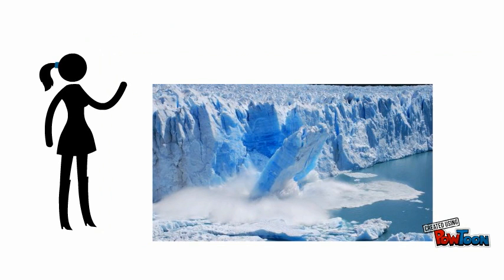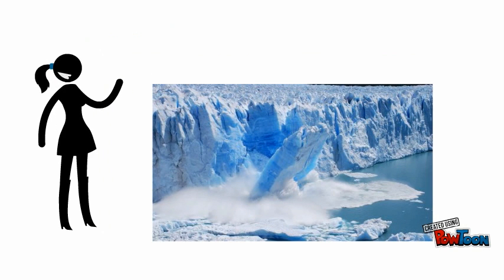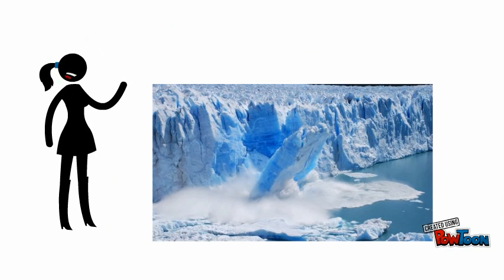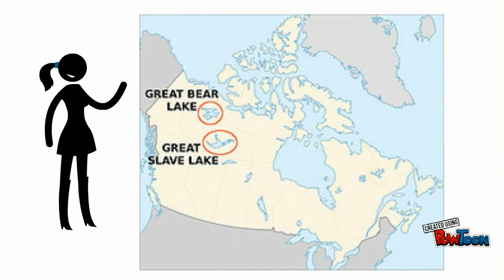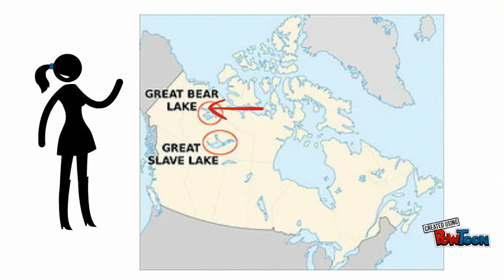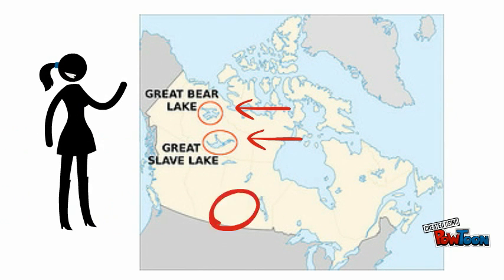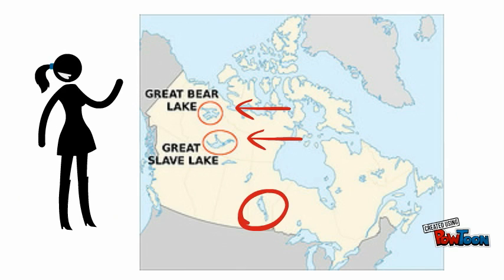When the glaciers melted, this allowed for rivers, streams, and lakes to form. There are three large lakes in the interior plains region. These lakes include the Great Bear Lake, Great Slave Lake, and Lake Winnipeg.